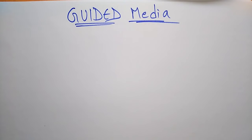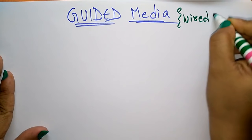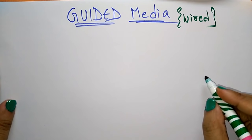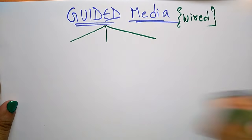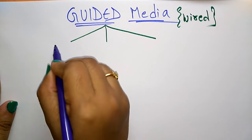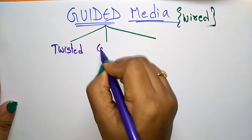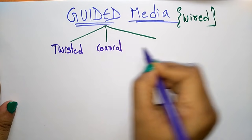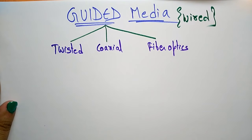Hi students, welcome back. Let us continue with the transmission media. The transmission media is of two types: one is guided and one is unguided. The guided type is also called wired communication. The guided media has three types of wired transmission medias: twisted pair cable, coaxial cable, and fiber optics.